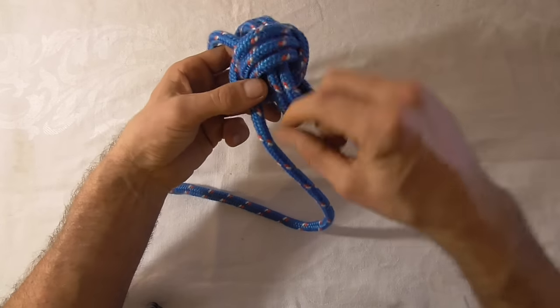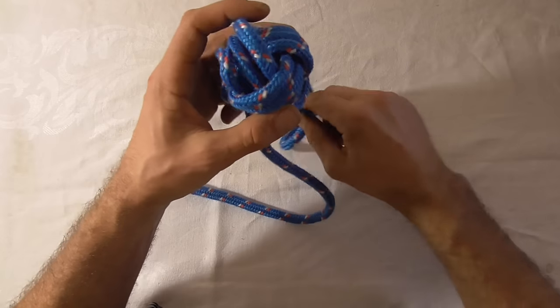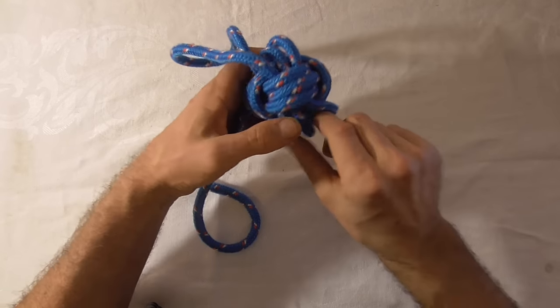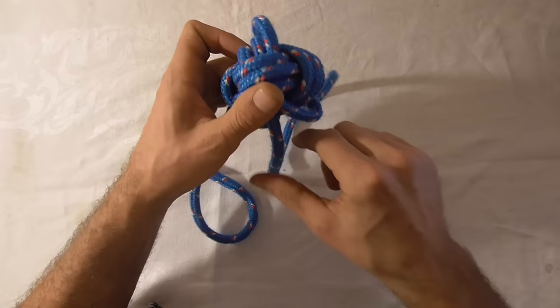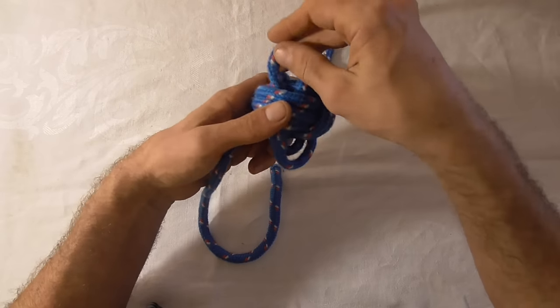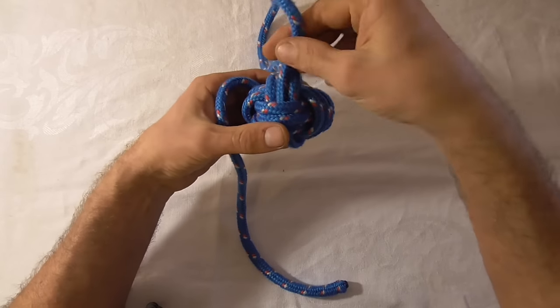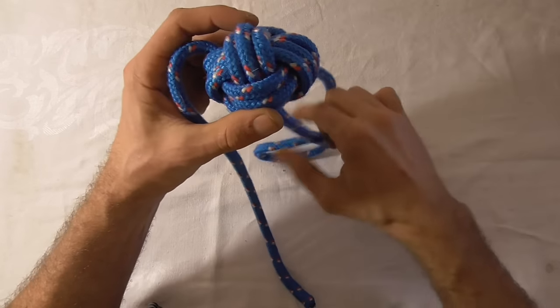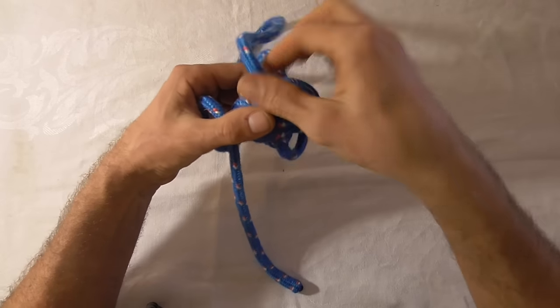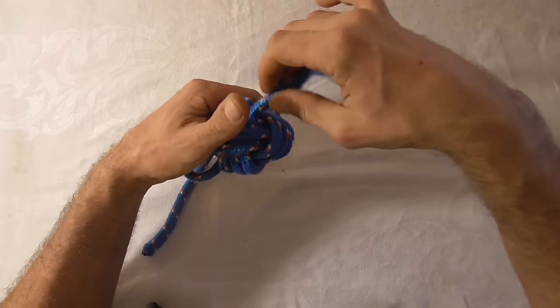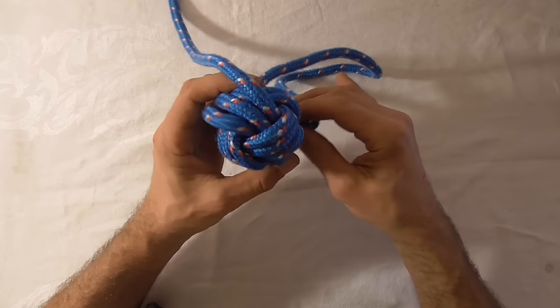Tighten up the next three loops. And this time we're working from left to right to tighten these up. And then again this is going to dive through the centre of the knot.